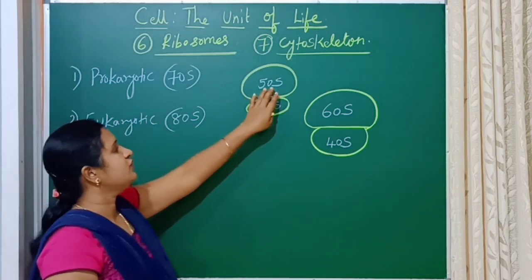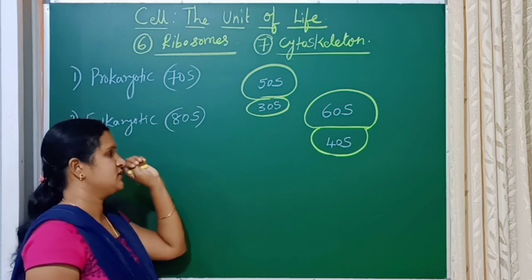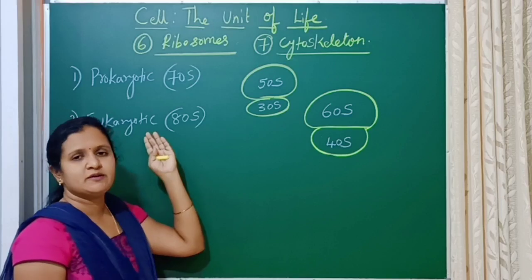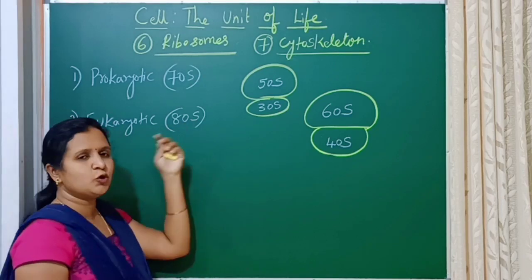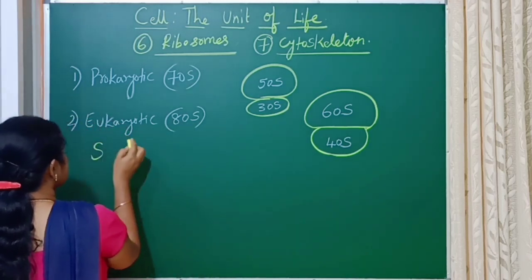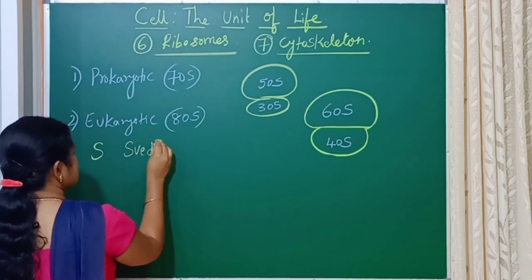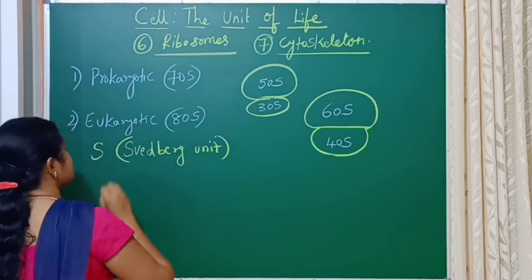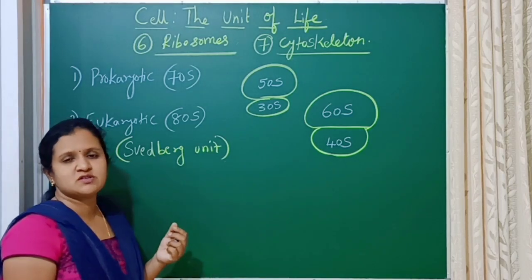So why is it that 50 plus 30 gives 70S, and 60 plus 40 gives 80S instead of the arithmetic totals? To understand this, we need to know what 'S' means. S stands for the Svedberg unit, named after the person who first discovered this unit.